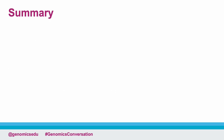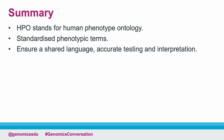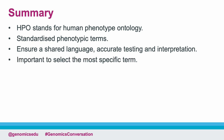So in summary, HPO stands for Human Phenotype Ontology. HPO terms are standardised phenotypic terms and they are stored in an accessible online database. It is vitally important to use HPO terms as a shared language to ensure the most accurate test is selected and to aid interpretation of variants. Terms are arranged in a hierarchy and it's important to select the most specific term. And finally, the HPO website is freely available online for you to explore.